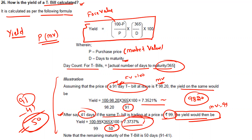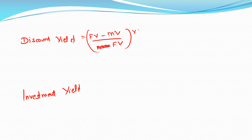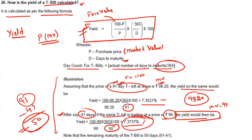These are basic questions they will ask in the examination — how to calculate the yield. To recap, there are two formulas: discount yield equals face value minus market value, divided by face value, multiplied by 365 divided by n. Investment yield or annualized yield equals face value minus market value, divided by market value, multiplied by 365 divided by n.